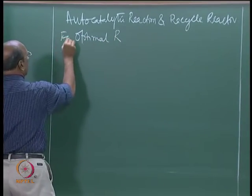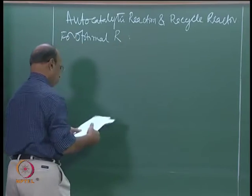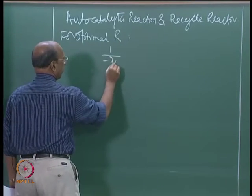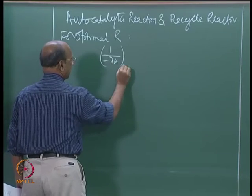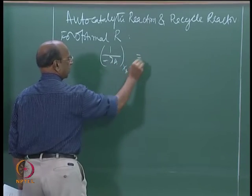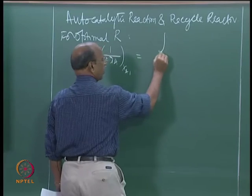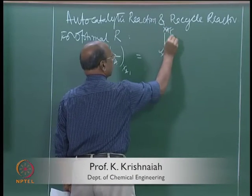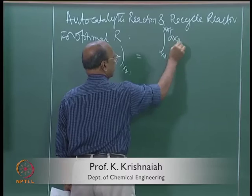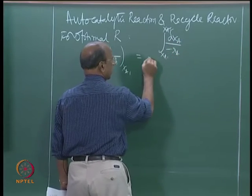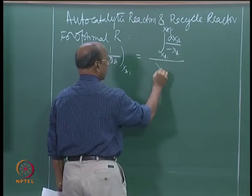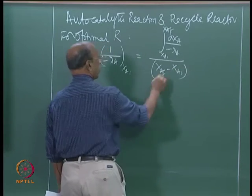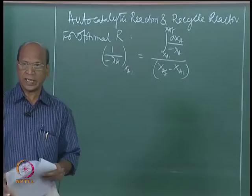For optimal R, what you have to follow is: 1 divided by minus-rA at XA1 must be equal to the integral from XA1 to XAF of dXA divided by minus-rA, all divided by the interval. That is the condition.